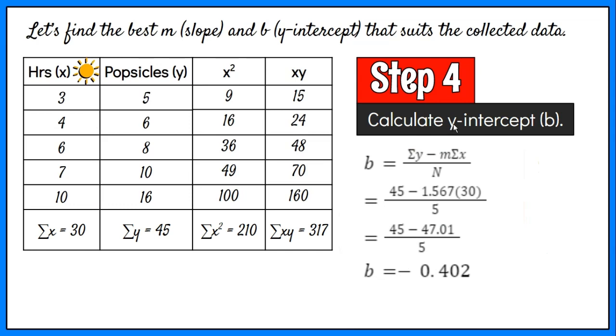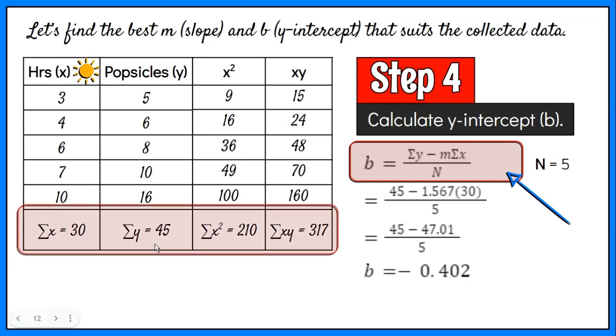Step 4: Calculate y-intercept or b. This is the formula that we will use to determine the y-intercept. Again, the n is the number of data values. For this example, it's 5. We use the computed values in the table. The result is negative 0.402.